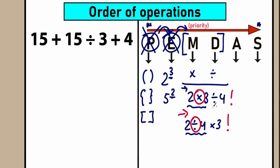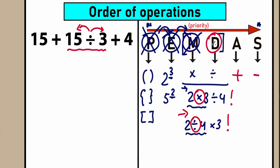Let's scan our question. We have addition — not interested right now. We have division. So we need to apply this division to both numbers on each side. Our first step is to evaluate 15 divided by 3. We don't have multiplication here, only division. So division comes first — D is before A, where A stands for addition and S stands for subtraction. As a result, we have 15 divided by 3 equals 5, giving us 15 plus 5 plus 4. We've completed the division part.